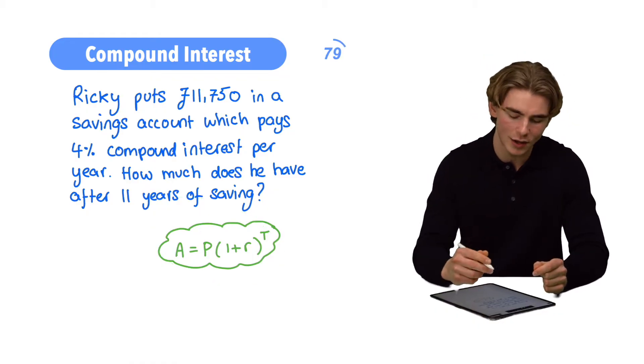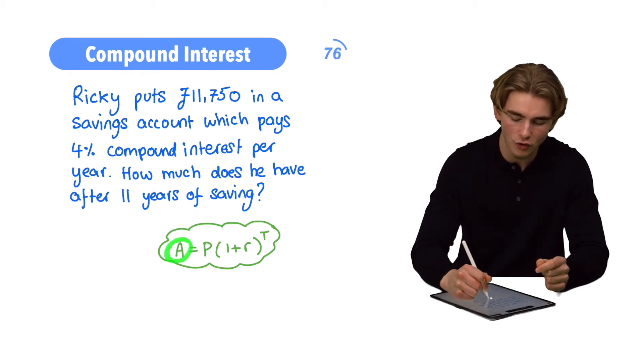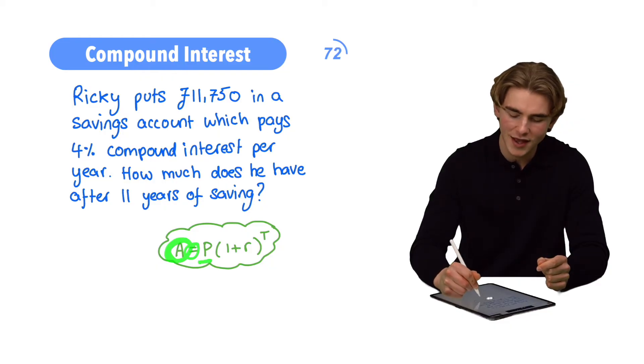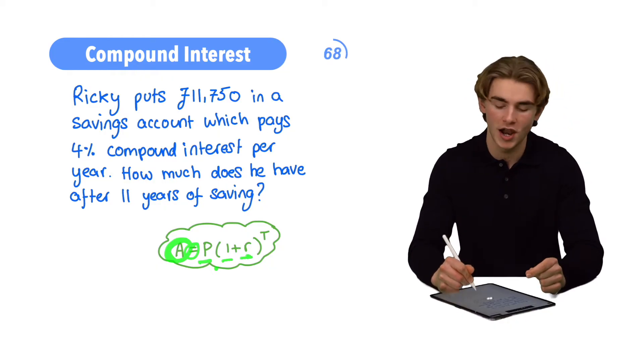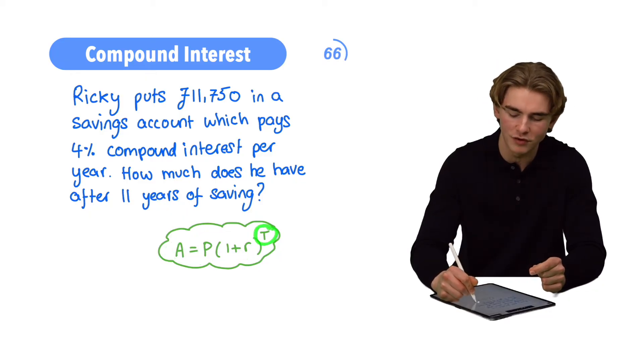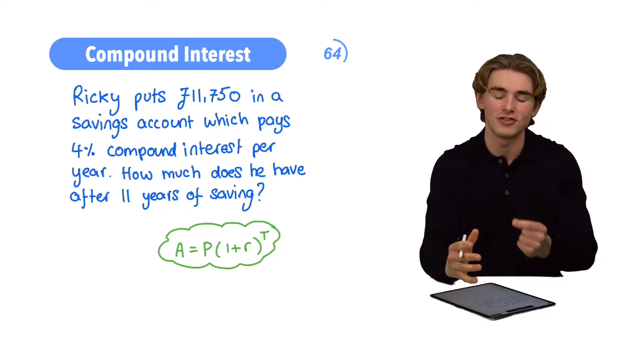This formula basically tells us that the end amount at the end of the overall set of time periods is equal to the start amount P times one plus our interest rate as a decimal raised to the power of the number of time periods. Let's make this clear by doing this example.